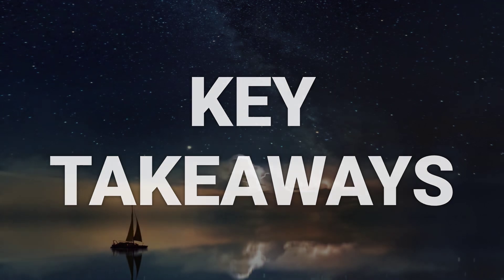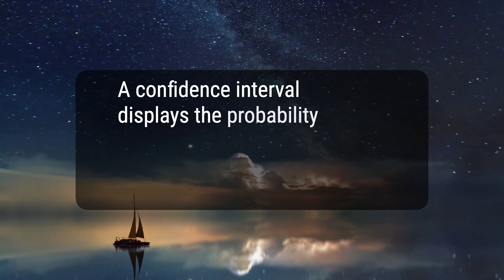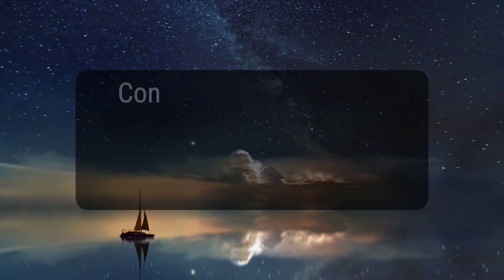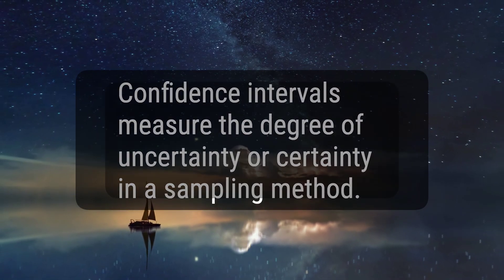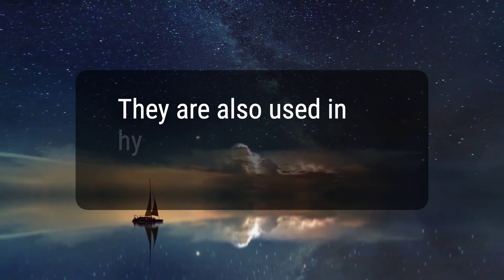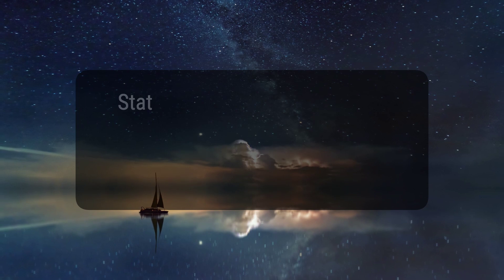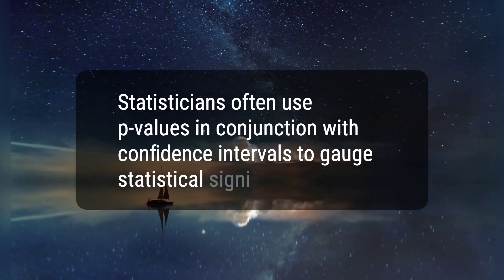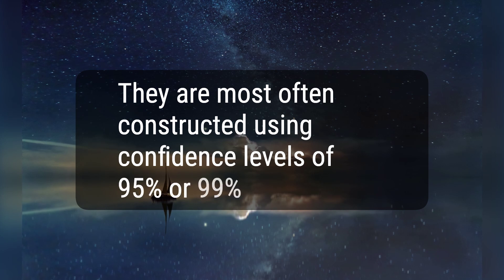Here are five key takeaways. 1. A confidence interval displays the probability that a parameter will fall between a pair of values around the mean. 2. Confidence intervals measure the degree of uncertainty or certainty in a sampling method. 3. They are also used in hypothesis testing and regression analysis. 4. Statisticians often use p-values in conjunction with confidence intervals to gauge statistical significance. 5. They are most often constructed using confidence levels of 95% or 99%.